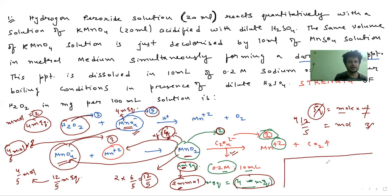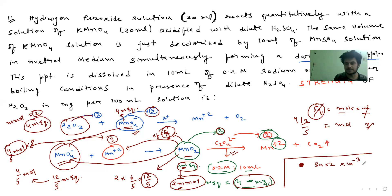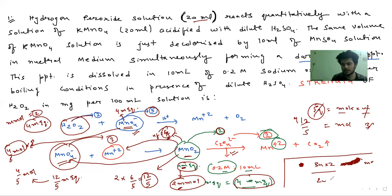H2O2 has 2 millimoles. Using the unitary method, 2 millimoles — how much is H2O2 mass? Molecular mass of H2O2 is 34, so 34 into 2 into 10 to the power minus 3. This gives the mass in milligrams. The strength is in 100 ml; we have 20 ml, so multiply by 5. The final answer is 3.